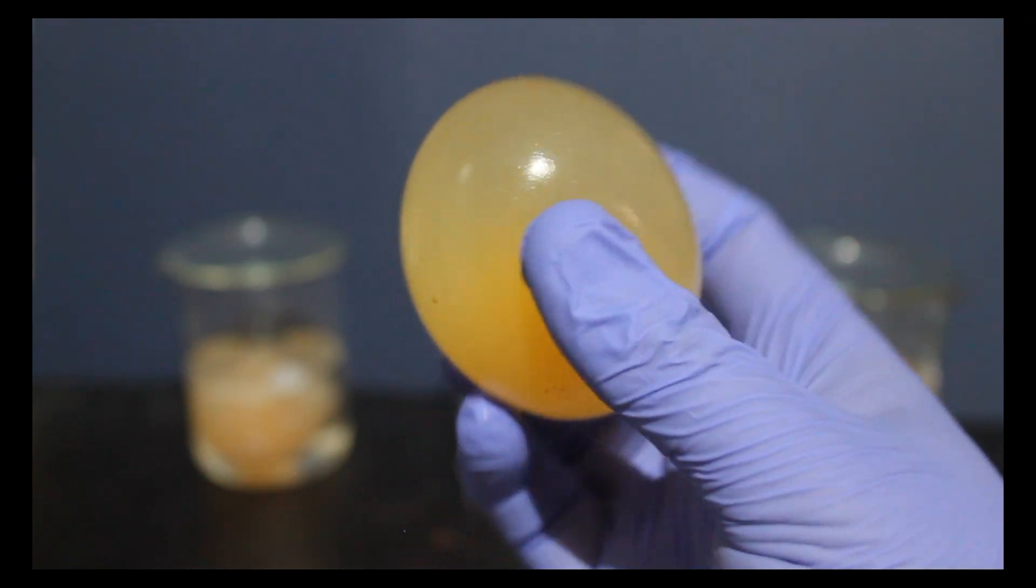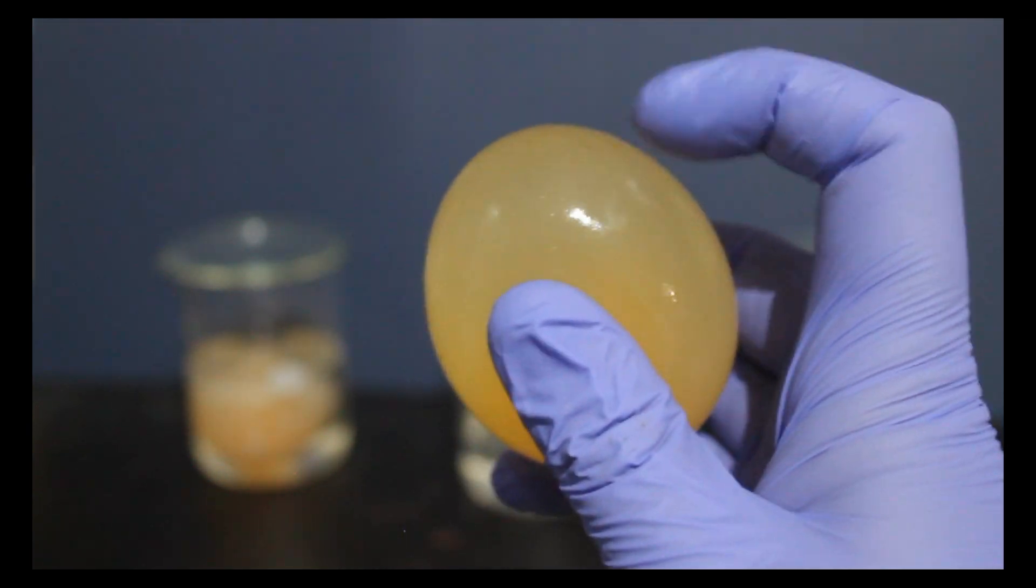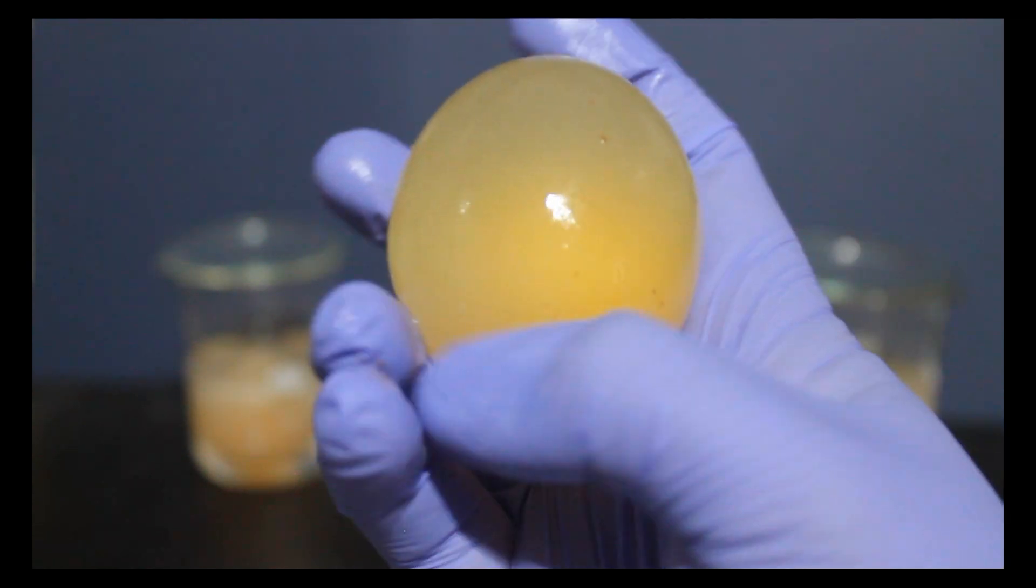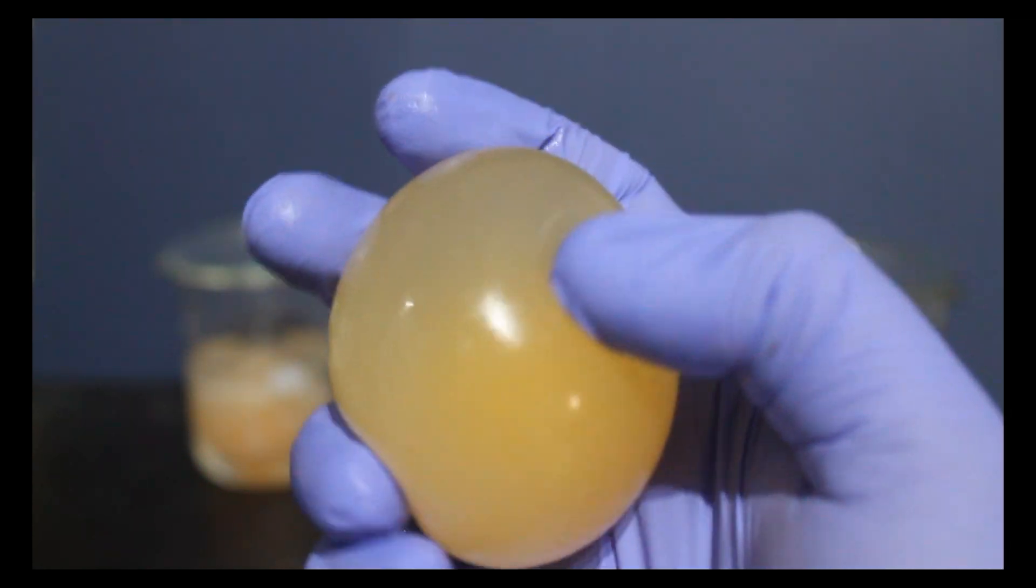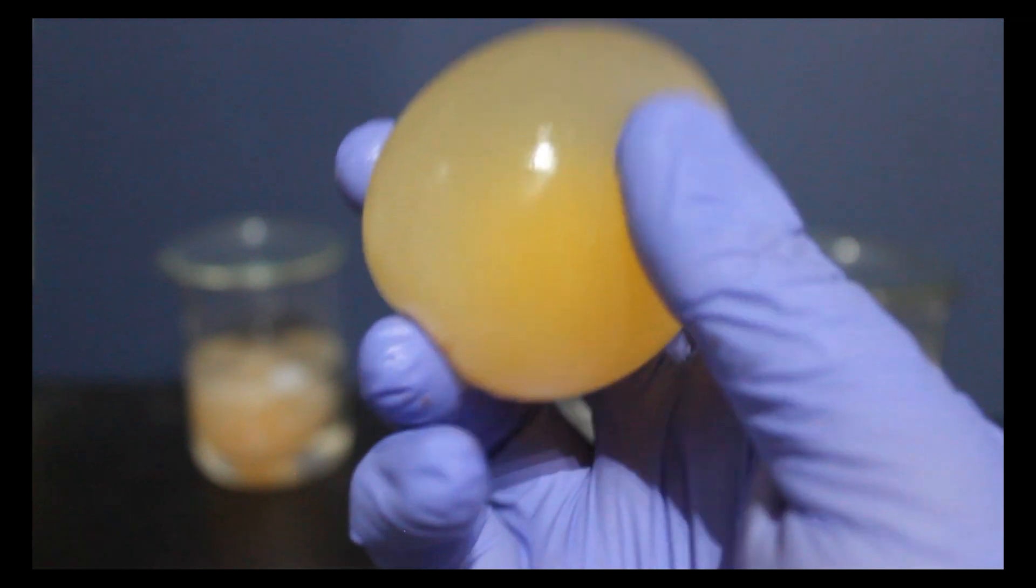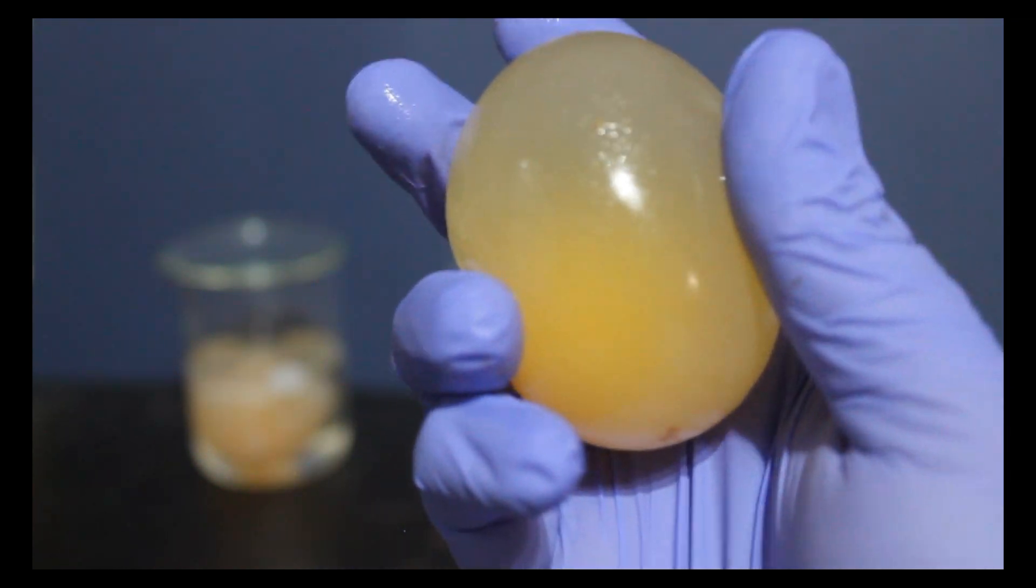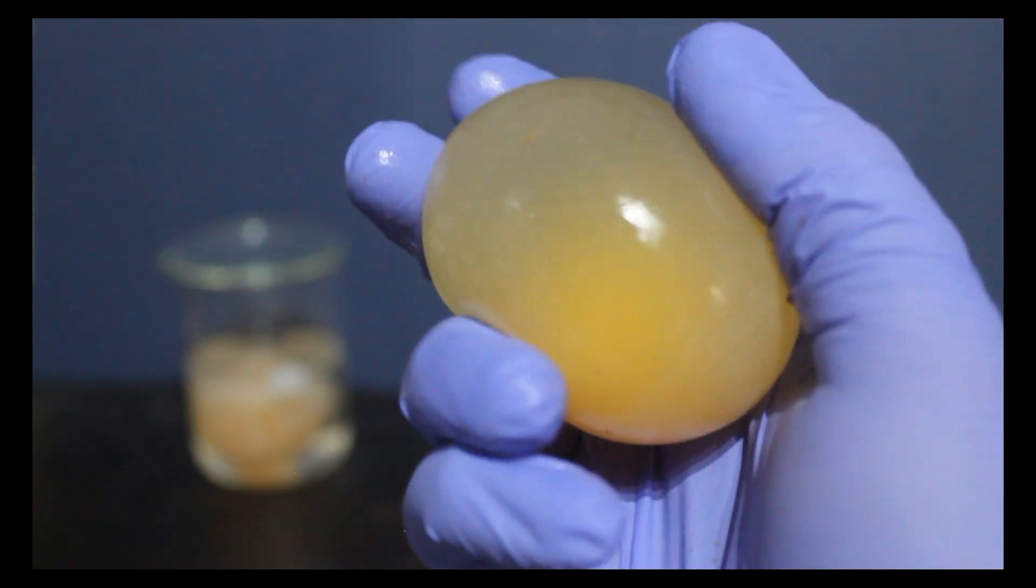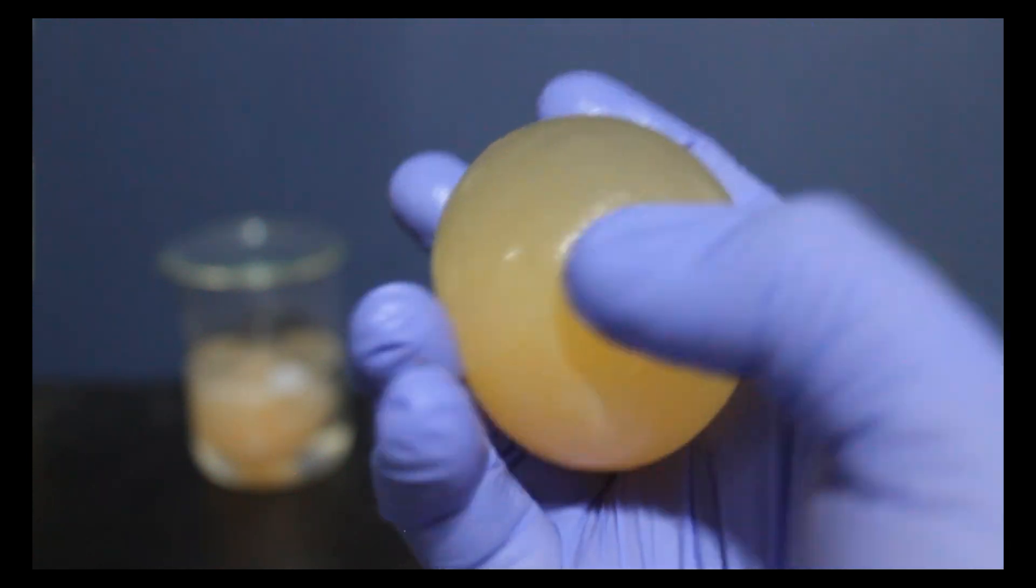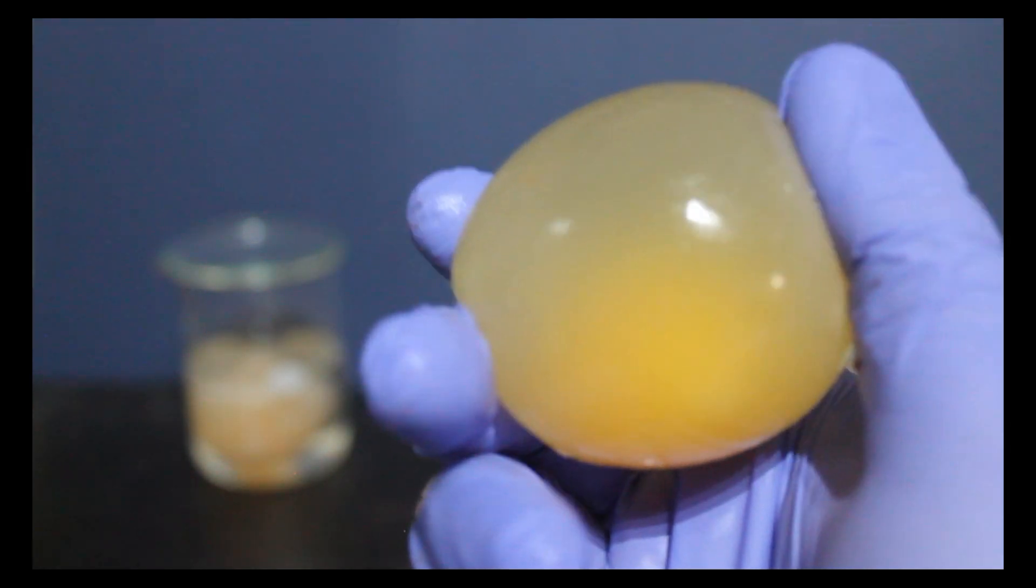For this we have chemically removed the shell of the eggs, leaving them inside of a semi-permeable membrane. This will represent the cell membrane. The conalbumin or egg white is going to be our cytoplasm and the yolk will represent our nucleus.